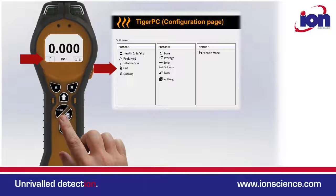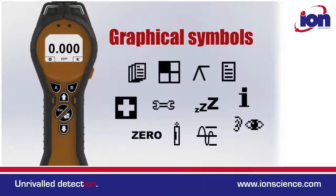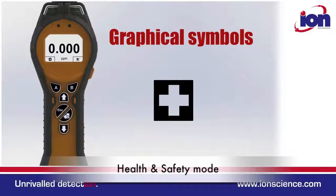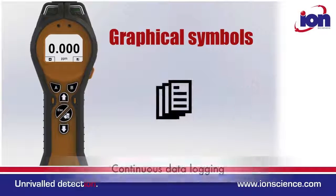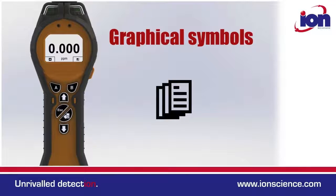Placing functions in a specific order can significantly improve productivity, specifically in repetitive applications. The Tiger has a wide range of features represented by the following graphics. Health and safety mode: when selected, the Tiger calculates personal STEL and TWA exposure levels. Continuous data logging: when selected, the Tiger automatically data logs at the frequency previously set in Tiger PC.